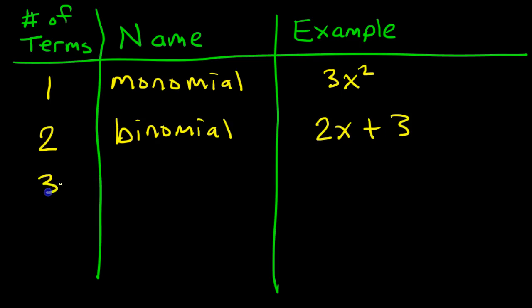If we have three terms, we call it a trinomial. For example, if I had x to the 5th power plus 2x to the 3rd power minus x, this would be a trinomial because it has three terms.